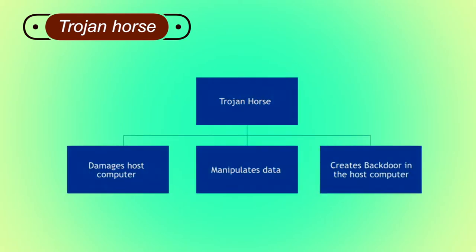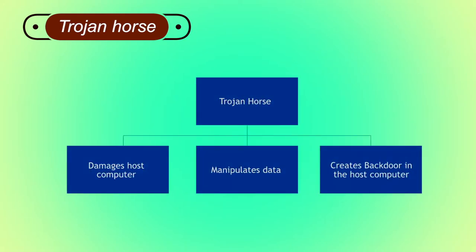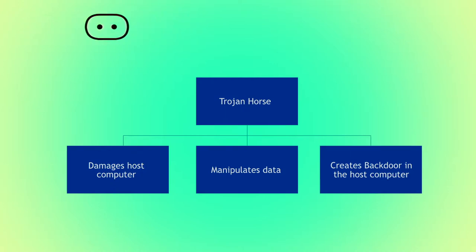Trojan Horse: it is a malicious code that is installed in the host machine by pretending to be useful software. The user clicks on a link or downloads a file that pretends to be a useful file or software from a legitimate source. It not only damages the host computer by manipulating the data but also creates a backdoor so that it could be controlled by a remote computer.